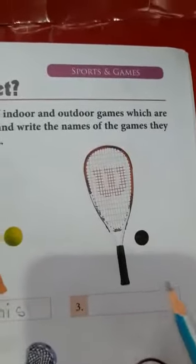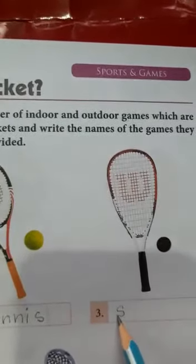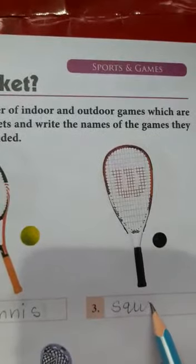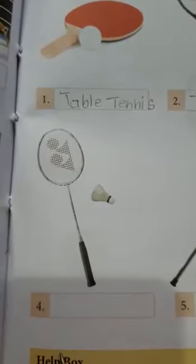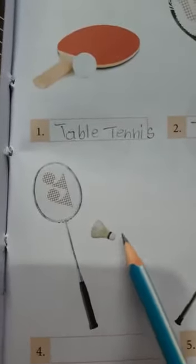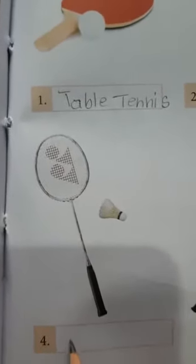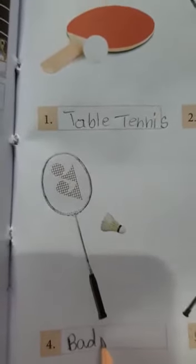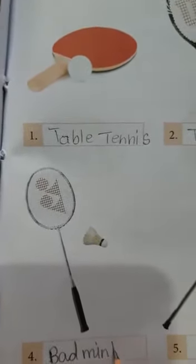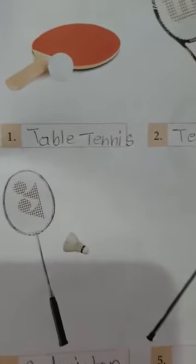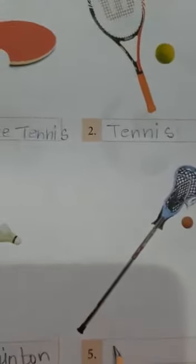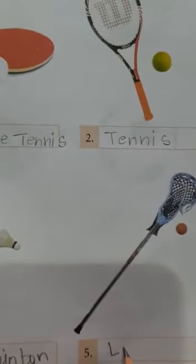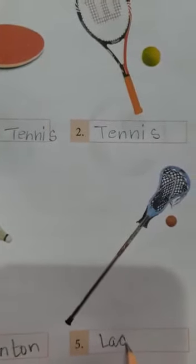At number three, this racket belongs to the game that is squash. At number four, this racket is very interesting - you can identify from the shuttle that this game is badminton. Many of you love to play this game. Next, this is a North American game and we call it lacrosse.